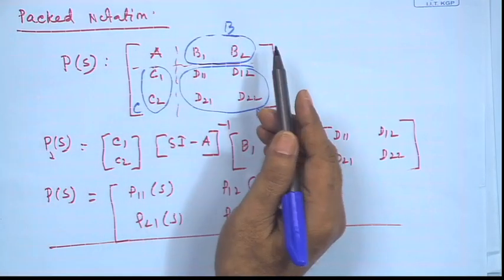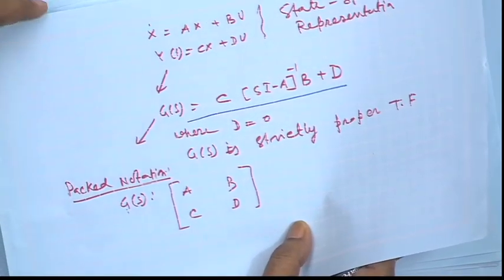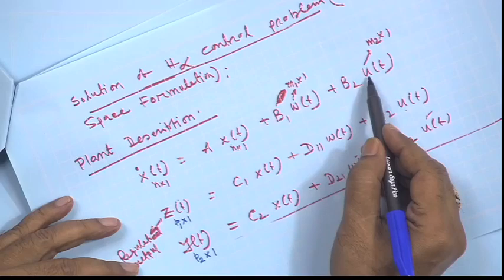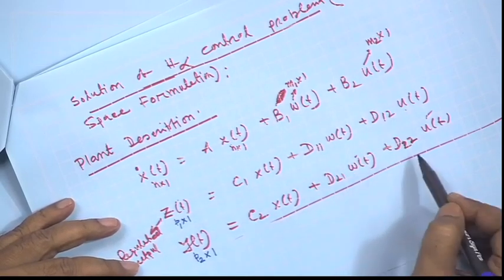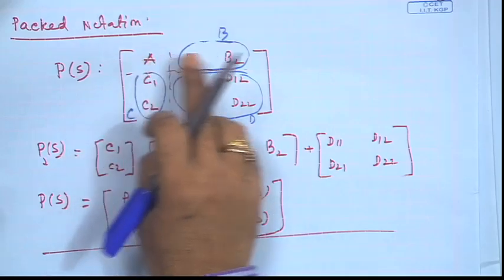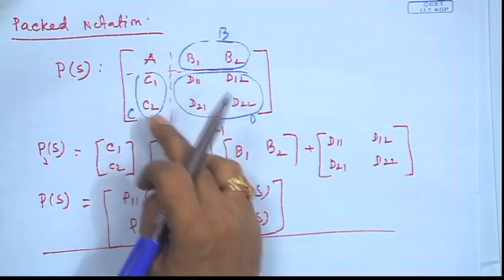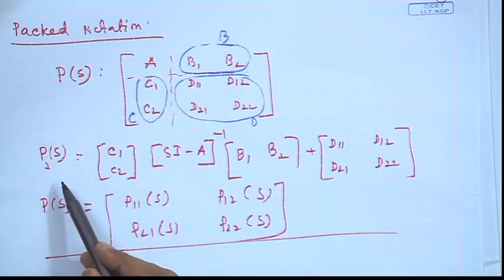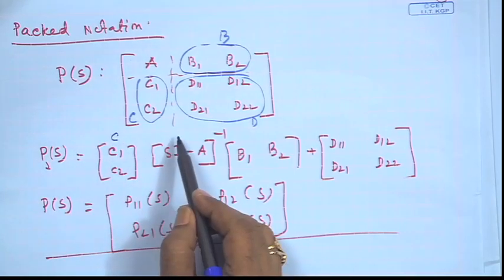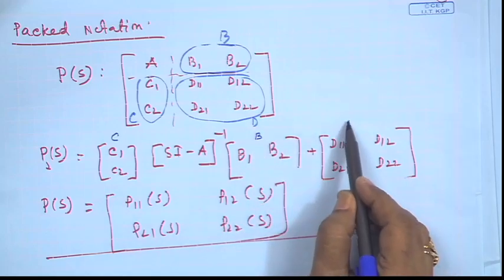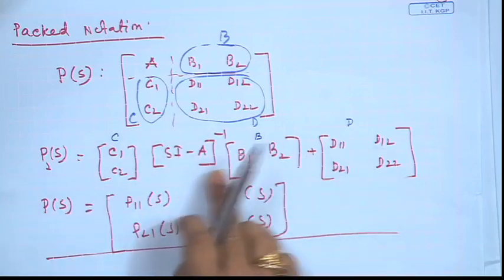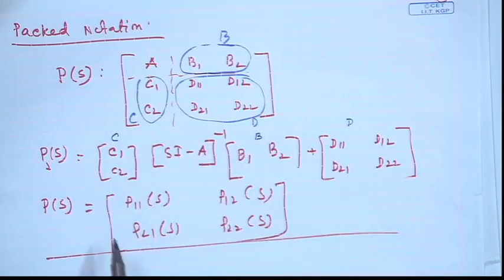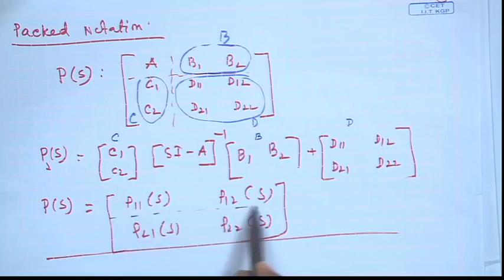Keeping this in mind, we can write our given set of equations in state space form in packed or shorthand form. Our A is as given. If you see the earlier equations, there are two inputs: one control input and one exogenous input. So if you want to find out the transfer function, we can write it in compact form.